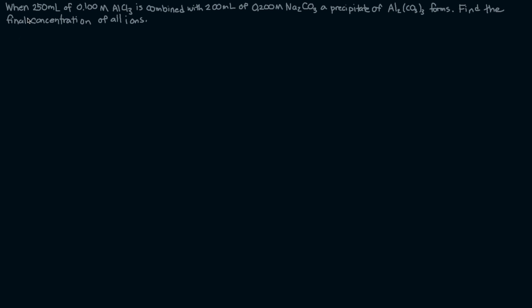Here at the top we have an example question. When 250 milliliters of a 0.1 molar aluminum chloride solution is combined with 200 milliliters of a 0.2 molar sodium carbonate solution, a precipitate of aluminum carbonate forms. Find the final concentration of all ions.